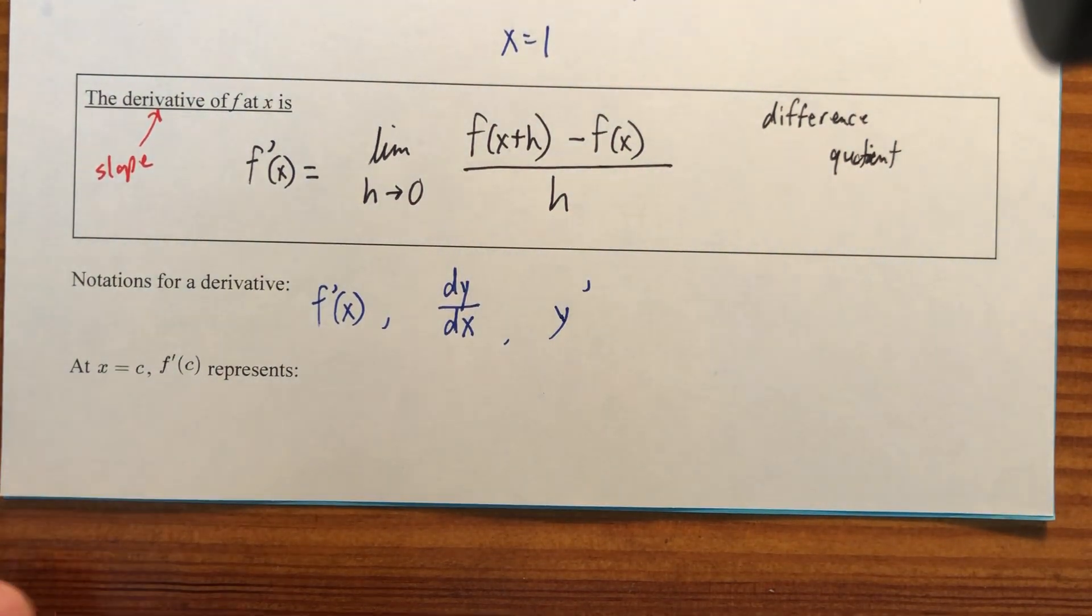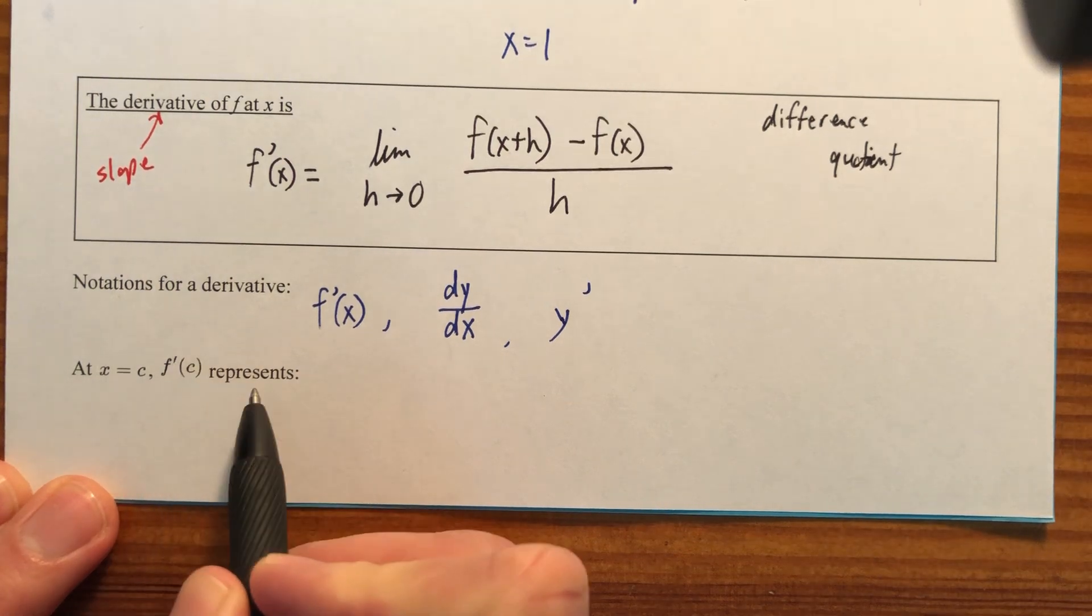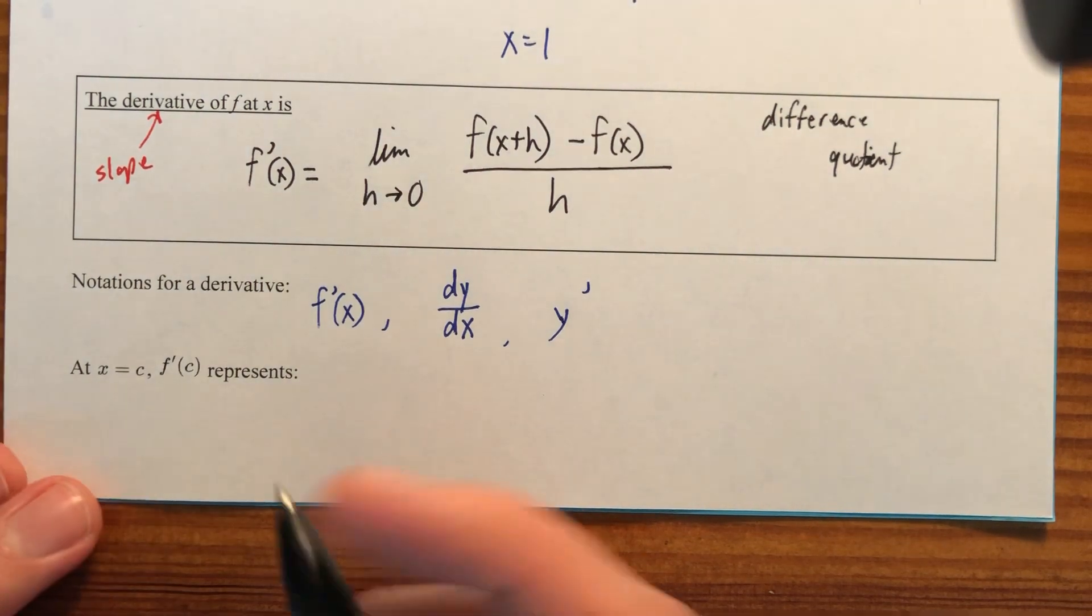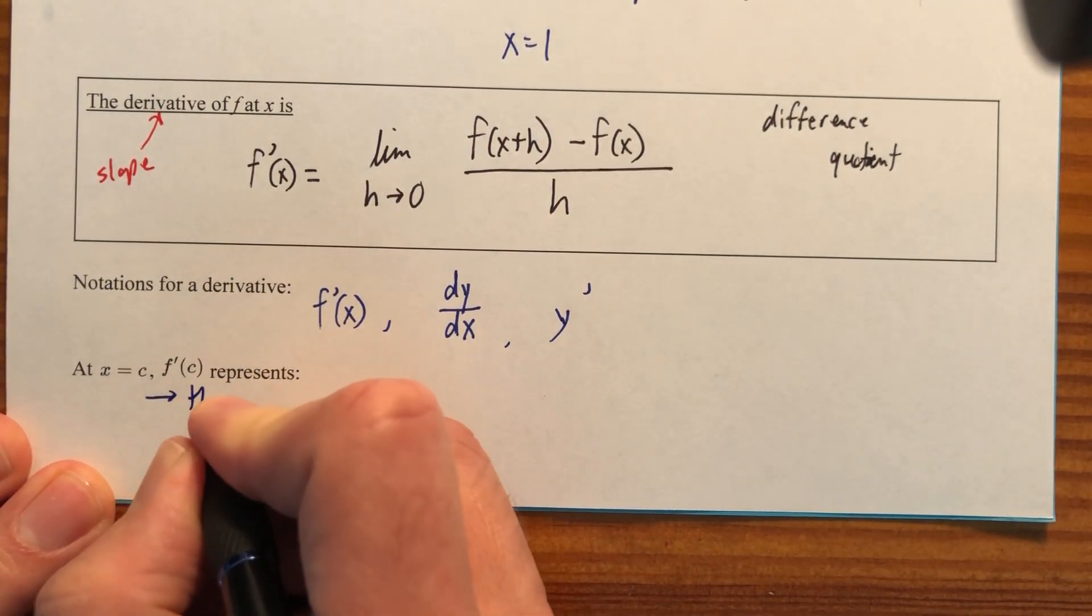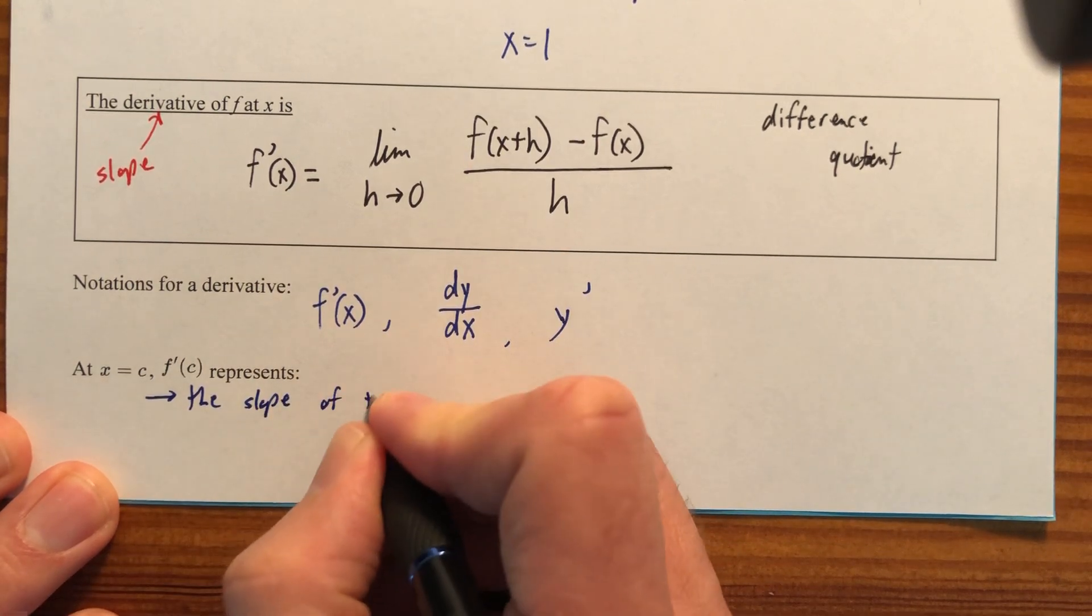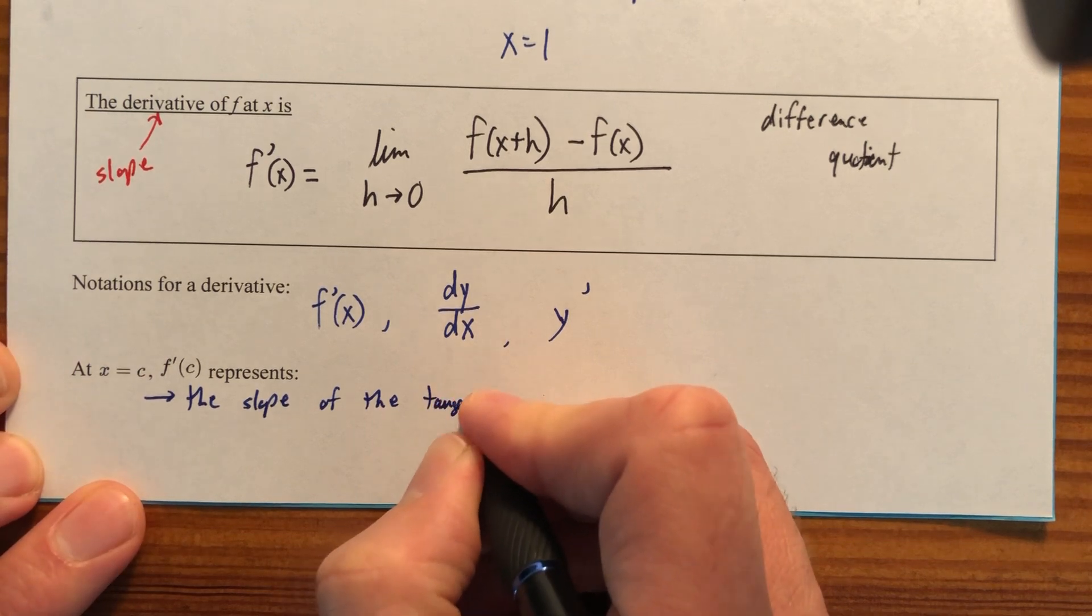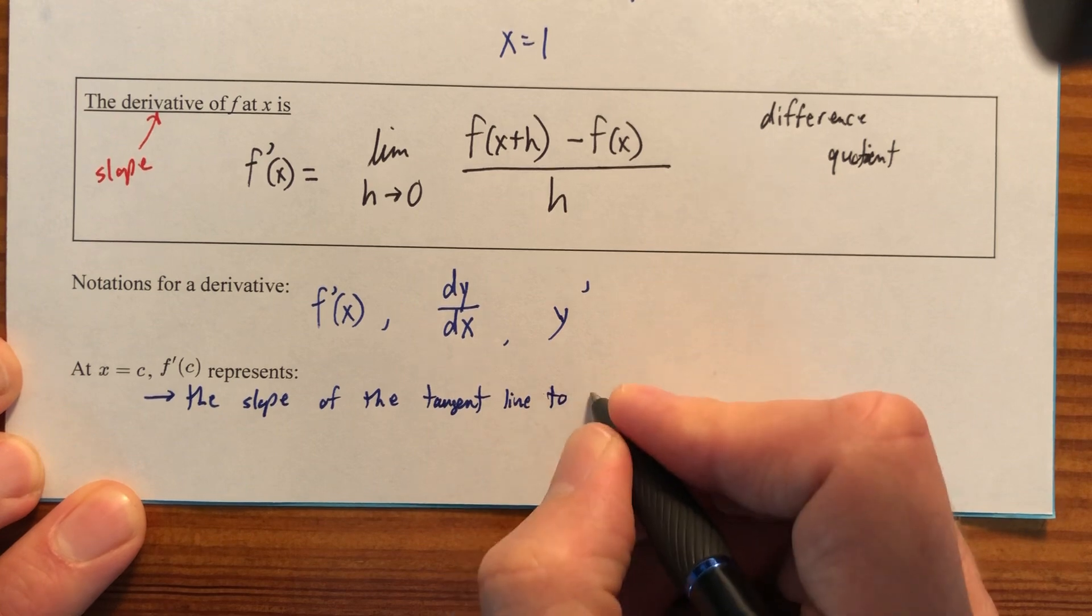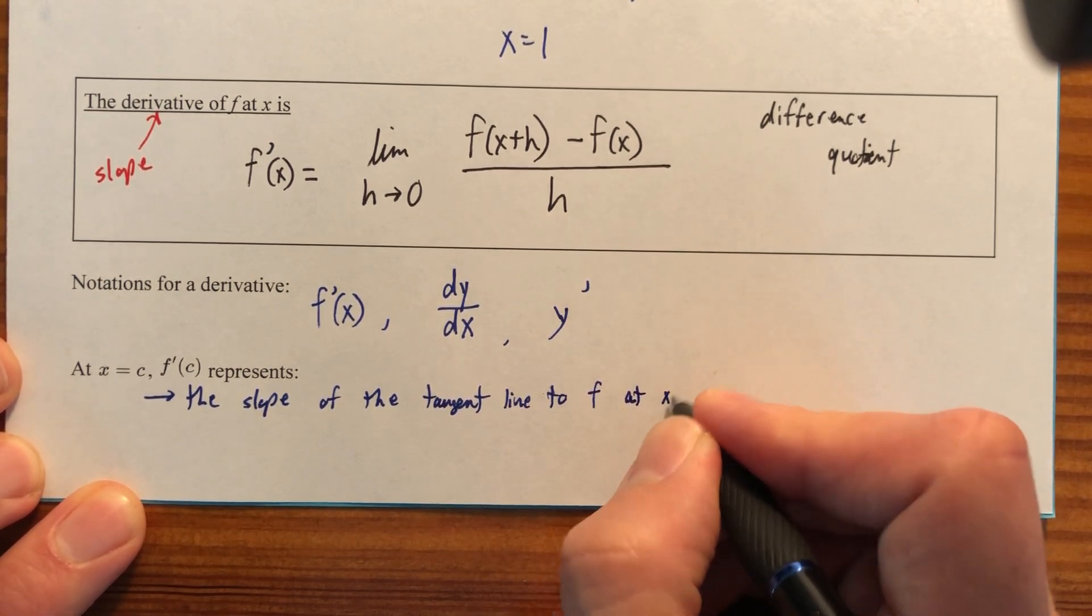And so a couple things I want to talk about at the bottom. What f prime of c represents. So you're going to see some of these phrases in different contexts, and I just want you to be familiar with them. So it could represent the slope of the tangent line to f at x equals c.